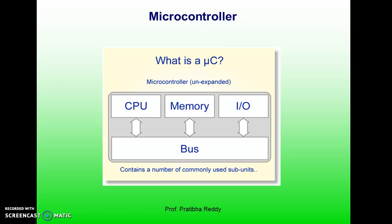In many applications, for example a TV remote control, there is no need for the computing power of a 486 or even an 8086 microprocessor. In many applications, the space it takes, the power it consumes and the price per unit are much more critical considerations than computing power. These applications most often require some input/output operations to read signals and turn on and off certain bits. For this reason, some call these processors IBP processors.